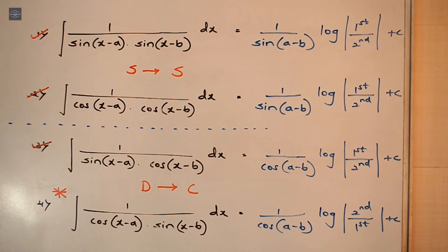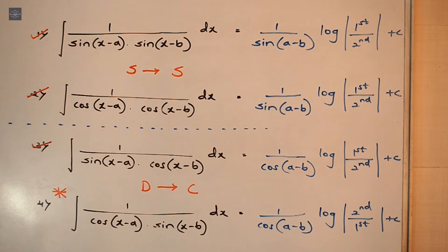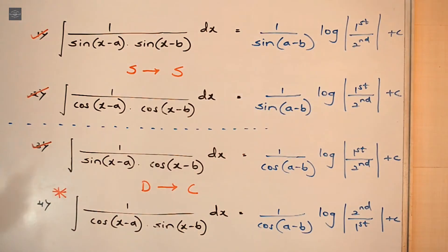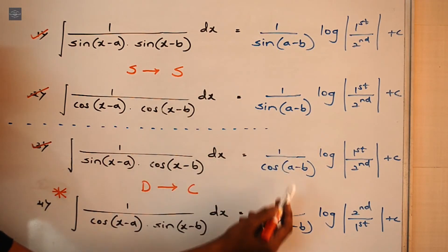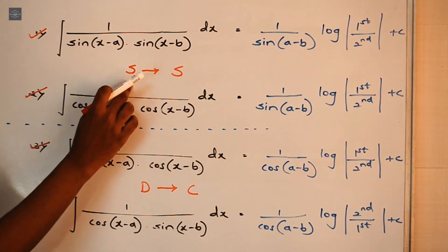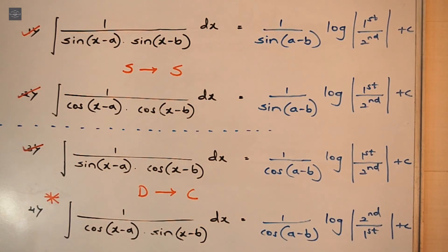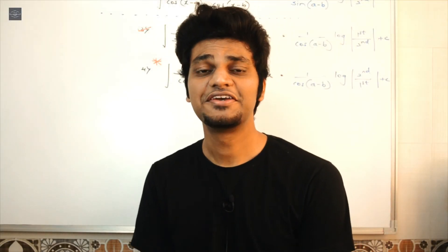So remember, the cheat code is: whenever we have got same terms in the denominator, always divide by the sin term, sin(A − B). And whenever we have got different terms in the denominator, always divide by the cos term, cos(A − B). One more thing — in place of sin(A − B) you can write sin(B − A) too; in that case you will get a minus sign. If you have the B minus A term, then you will get a minus sign and the rest is exactly the same. So SS and DC — this was the cheat code of today.